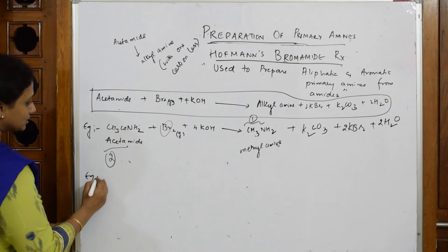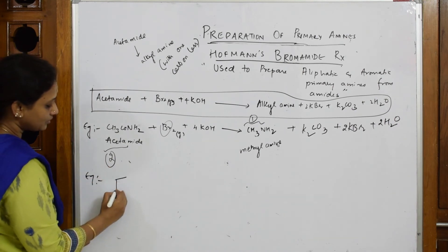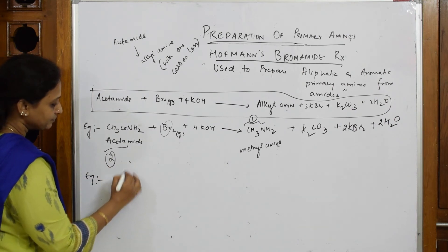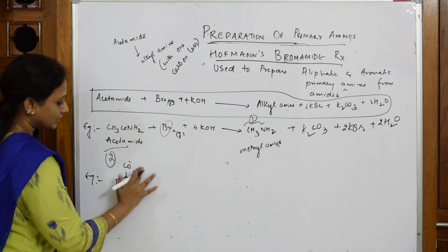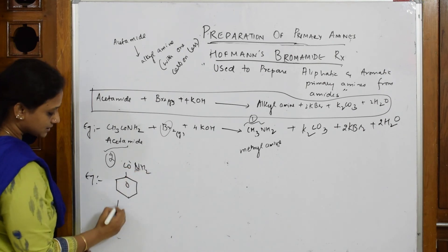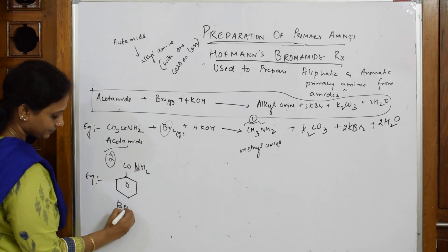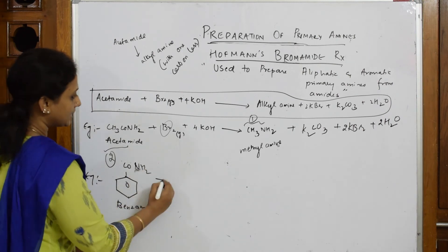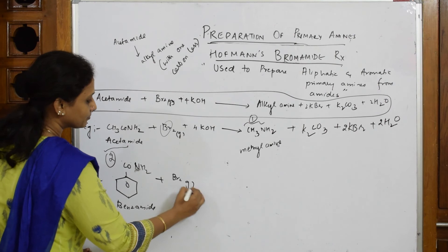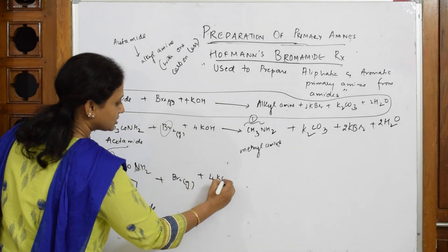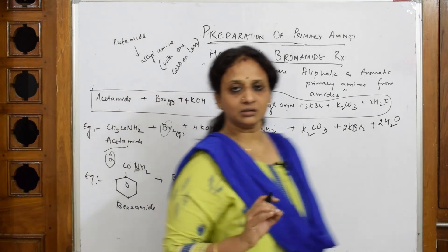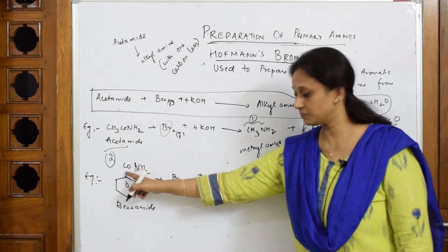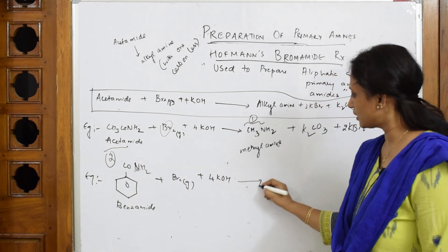Now let us prepare aromatic amine. For that I am going to take benzamide, this is CO NH2. To this benzamide I am going to add bromine gas, again you add 4 KOH.